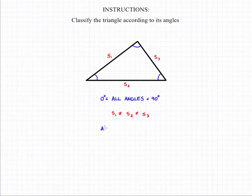So the first piece of information tells us that we're dealing with an acute triangle, a triangle where all of the angles are less than 90 degrees. And the fact that none of the sides are equal to each other means we're dealing with a scalene triangle.